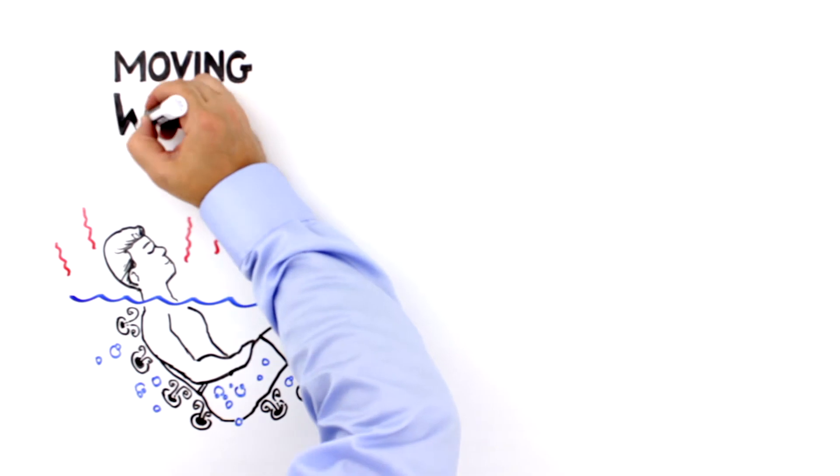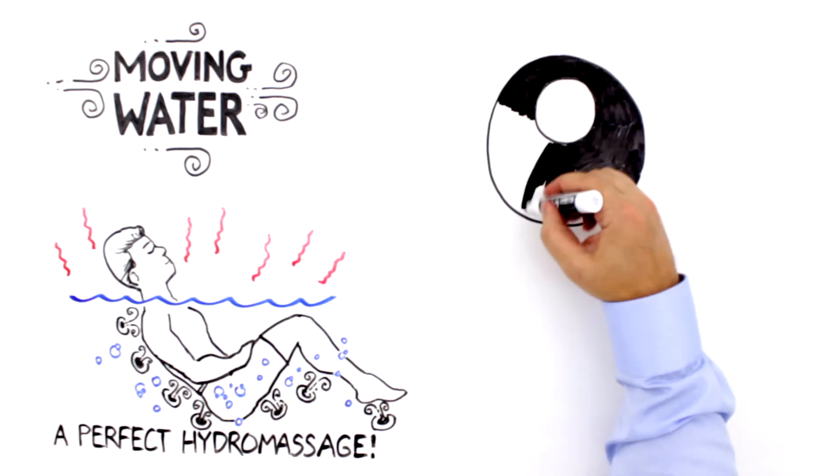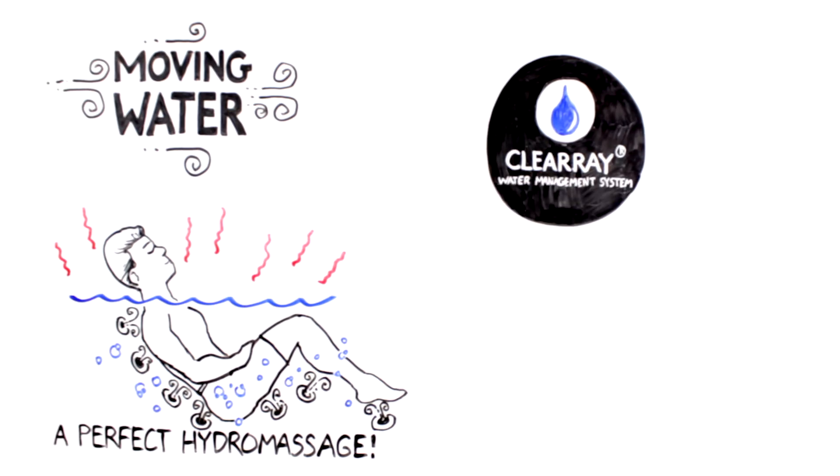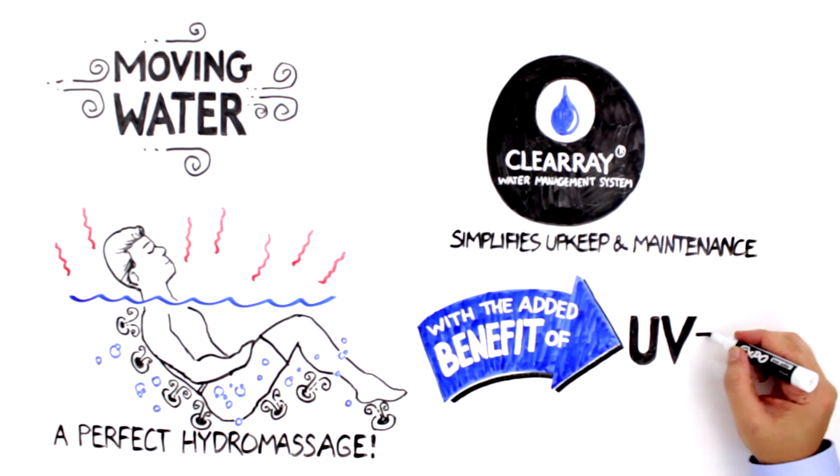While we know that Aqualibrium is the key to a perfect hydromassage, it also takes the right technology to keep that water clean. That's why the Jacuzzi brand developed their revolutionary Clear Ray water management system. This system simplifies the upkeep and maintenance of their spas with the added benefit of UVC light to treat water. Here's how it works.